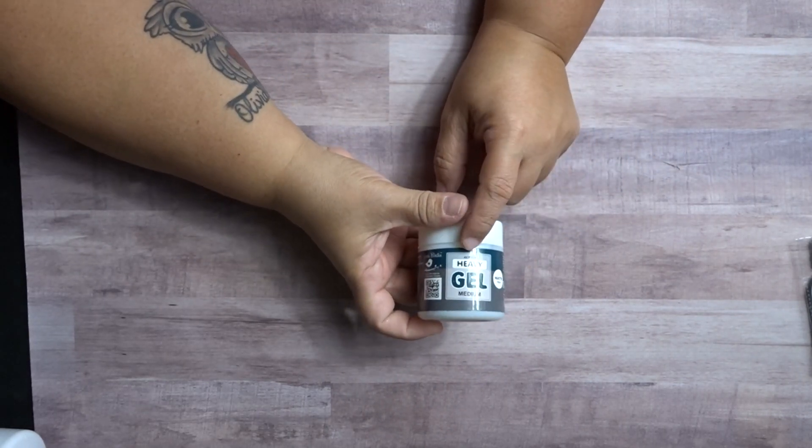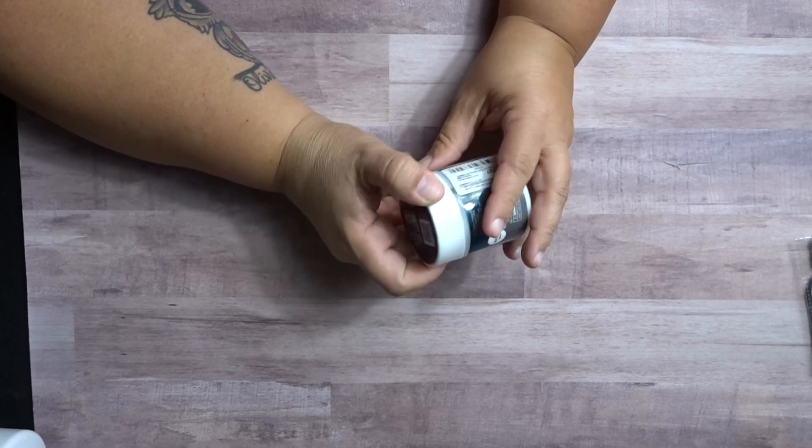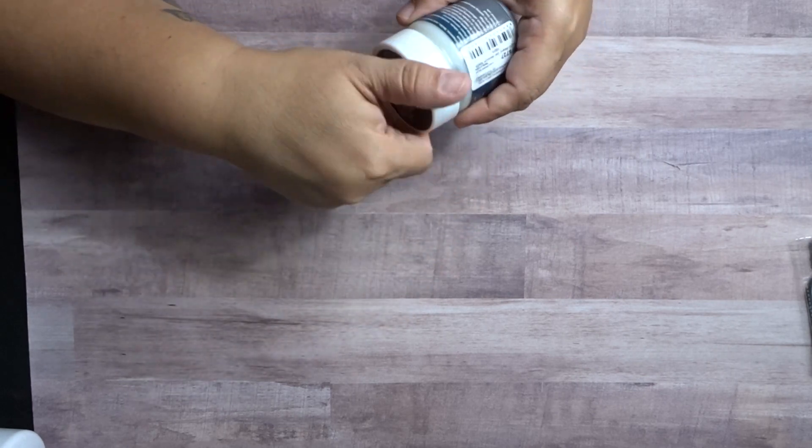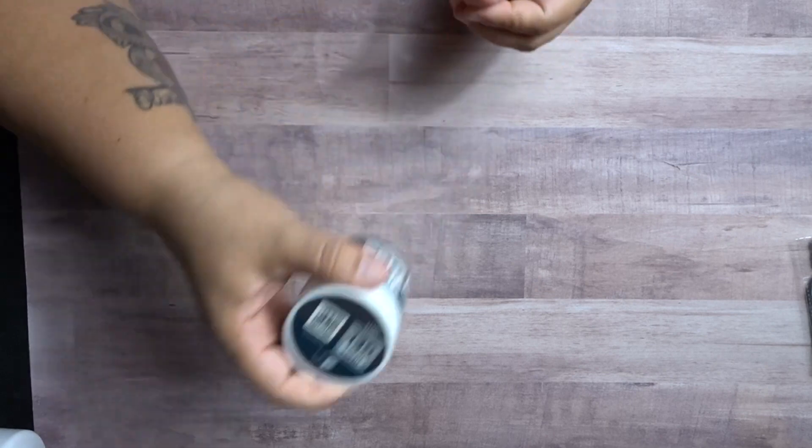So I thought that was kind of funky to put in the craft area. And then they have this heavy gel medium. 100 milliliters. Matte. I think it's closed. You can't really see nothing. But, yeah, I thought trying to get all my mixed media stuff. And when they saw that they have so many for such good prices, I couldn't pass that up.